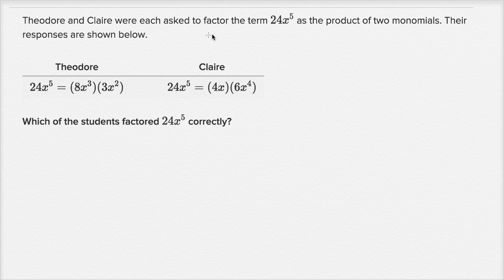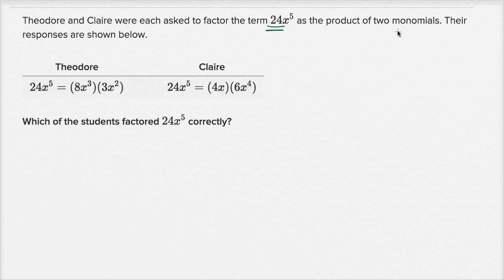Theodore and Claire were each asked to factor the term 24x to the fifth as the product of two monomials. Their responses are shown below.